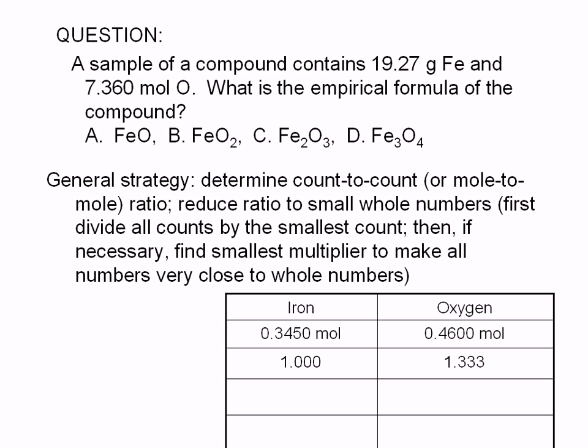So far, we have determined that the sample contained 0.3450 moles of iron and 0.4600 moles of oxygen. So the iron-to-oxygen mole ratio is 0.3450 to 0.4600. A good strategy for reducing this ratio to a whole number ratio is to first divide both numbers by the smaller number. In this case, 0.3450 is the smaller number. Dividing 0.3450 by 0.3450 gives us 1.000, and dividing 0.4600 by 0.3450 gives us 1.333.